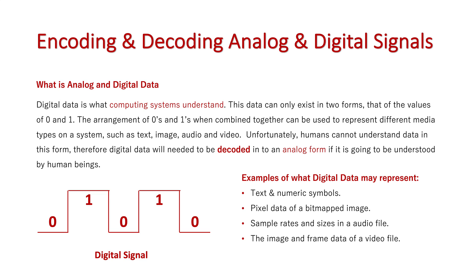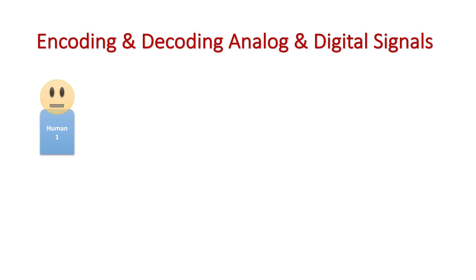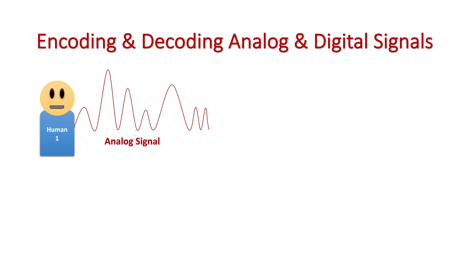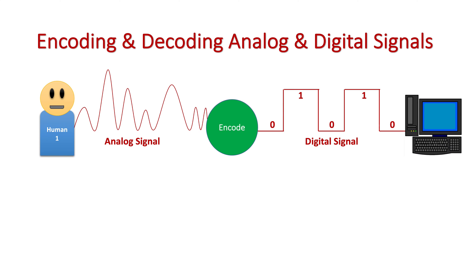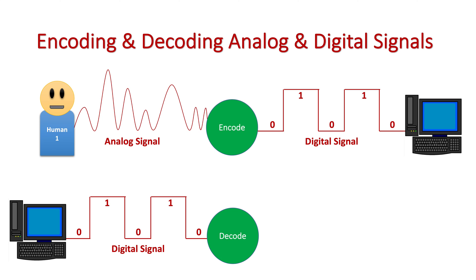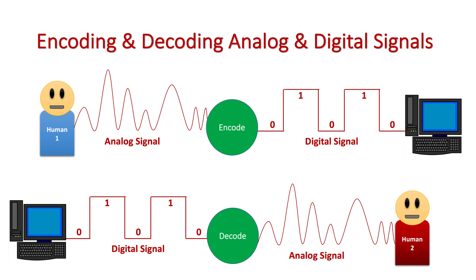Now let's put this graphically together. In a communication system, here we have human number one, and they might be talking — say, in a VoIP system. Their spoken voice is an analog signal, which then needs to be encoded by the system into a digital form so it can be understood by a computer and sent through the communication system. On the other end, the computer uses its digital data, but it needs to decode that data back into human one's voice so it can be understood by human two. This shows the relationship between encoding and decoding: the transformation from analog data into digital data so it can be sent through a digitised communication system, then decoded back into analog form to be understood by humans.